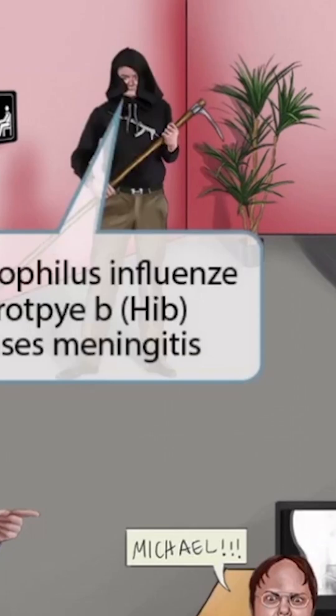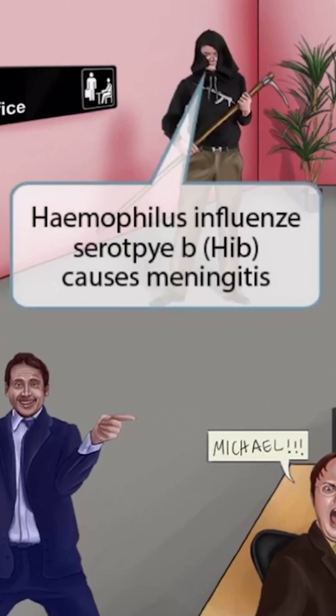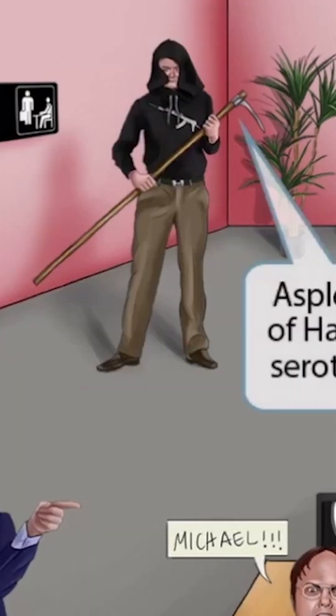Now let's talk about this weird old creepy guy named Credence. He's kind of a shady dude, so it makes sense that he's standing in the corner with his hood on. We've been using hats in our other images as a symbol for meningitis, so Credence's hood in this image should help you remember that HIB causes meningitis.